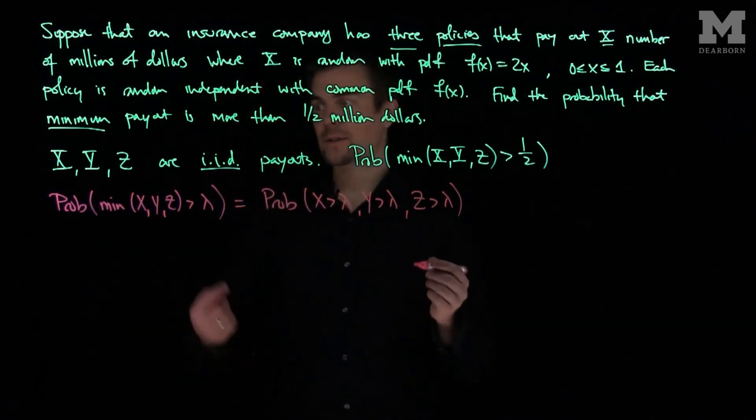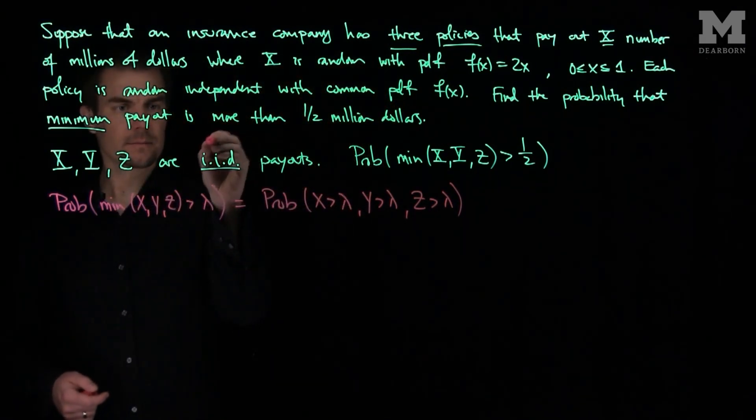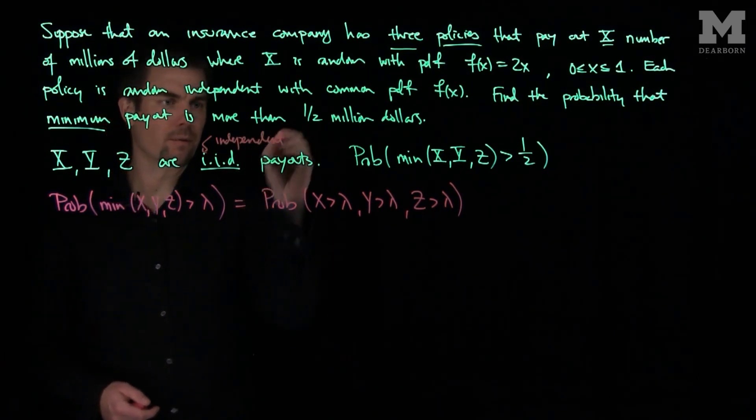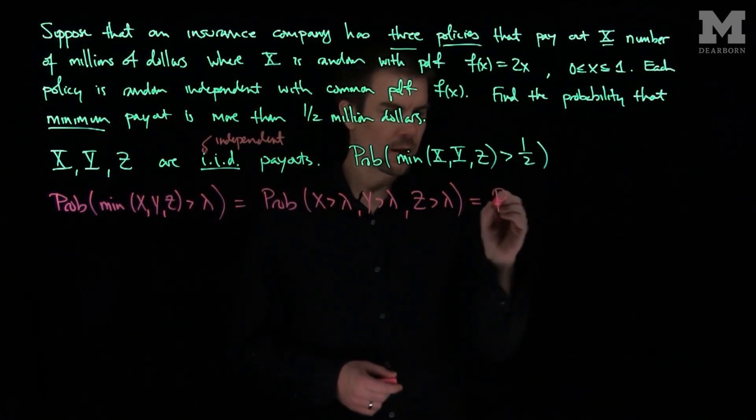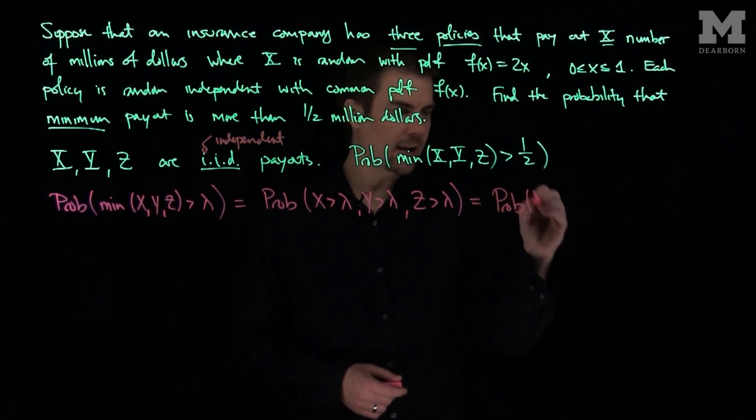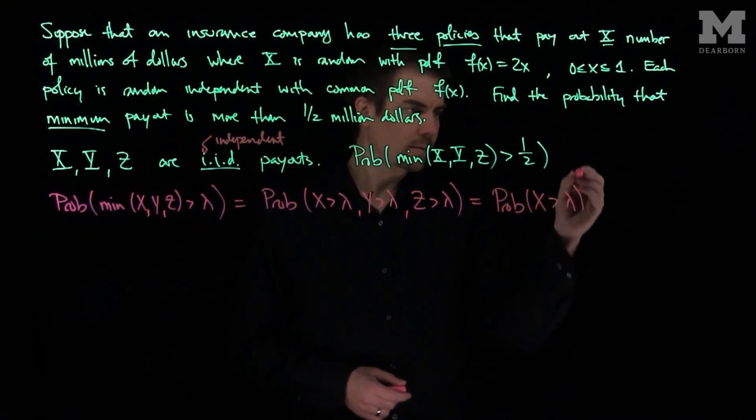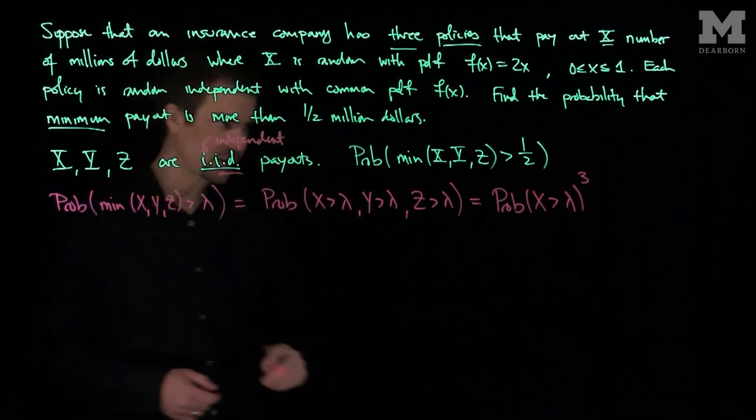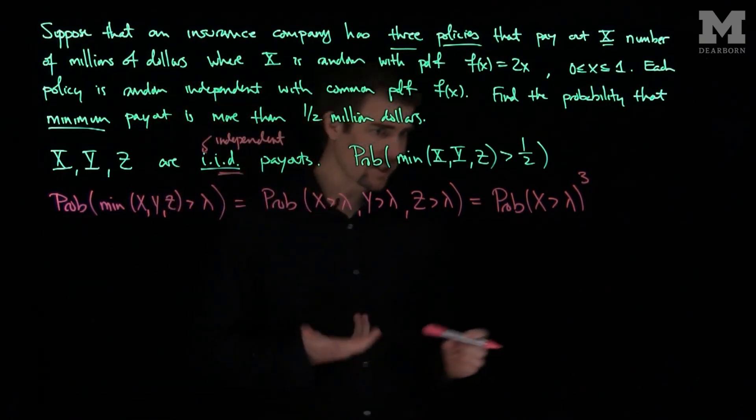So those are and, and since they're independent, we can break up this probability into three parts. This is the probability that X is bigger than lambda cubed, since they're identically distributed. They have the same distribution, so they have the same survival function.